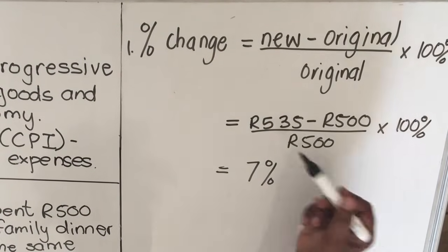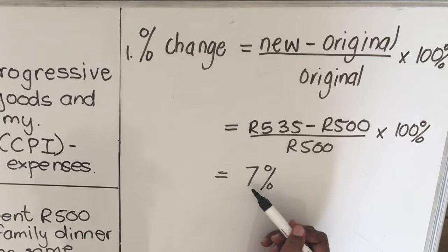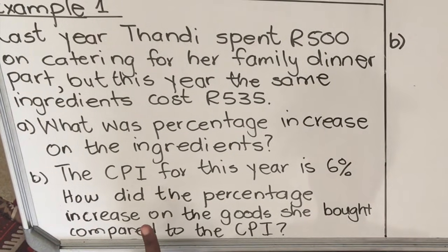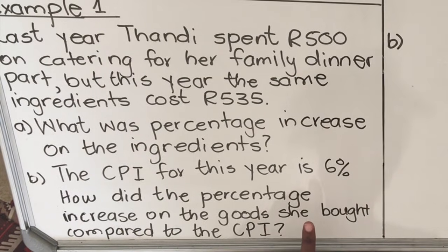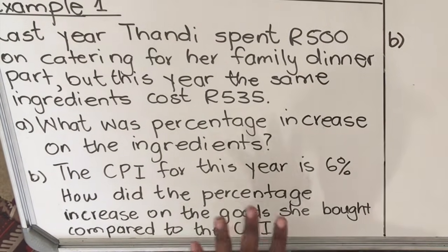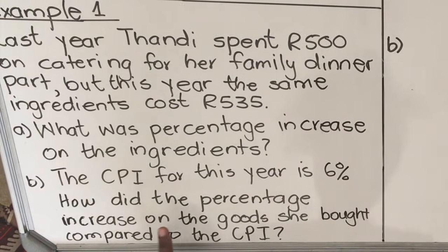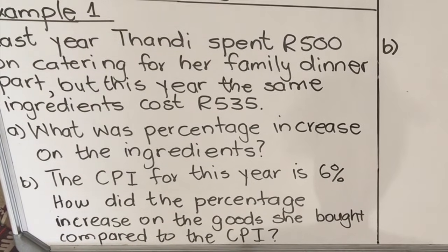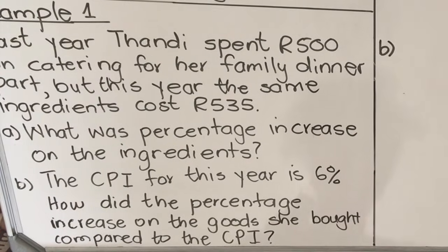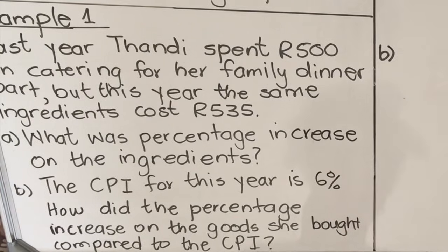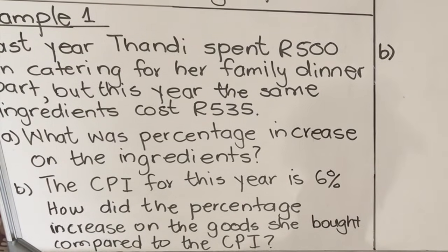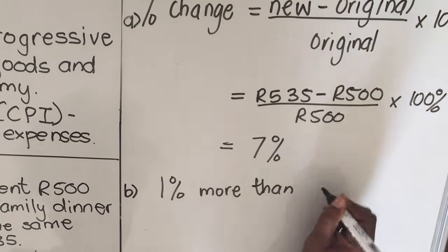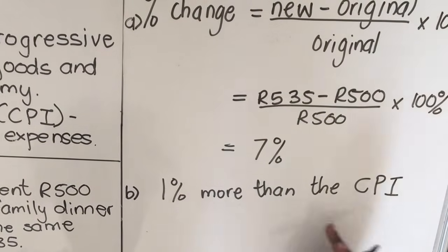Part b: the Consumer Price Index for this year is 6 percent. How did the percentage increase on the goods she bought compare to the Consumer Price Index? The CPI is 6 percent and the goods she bought increased by 7 percent, so the goods she bought are 1 percent more than the Consumer Price Index.